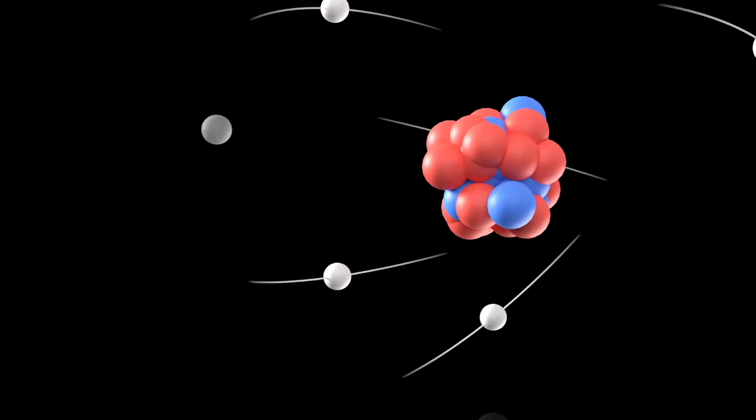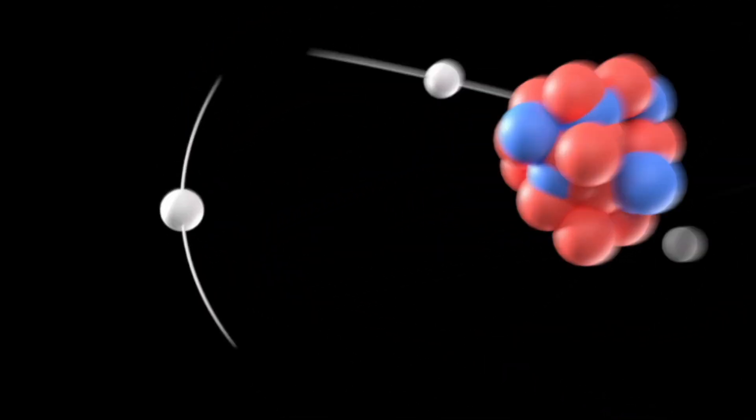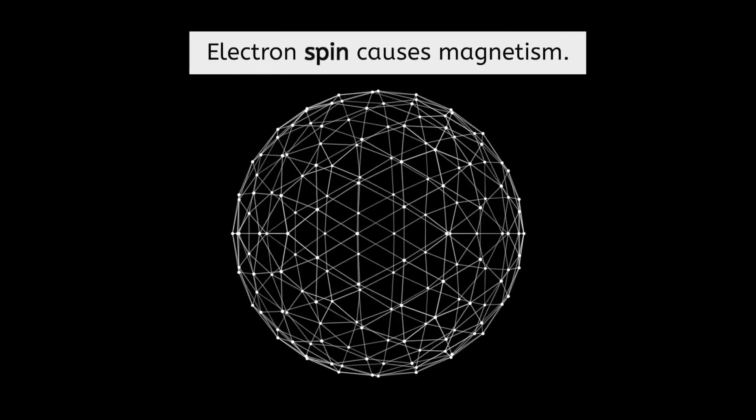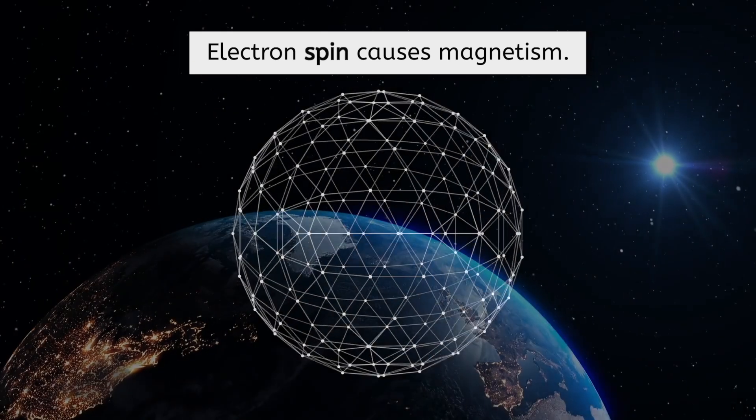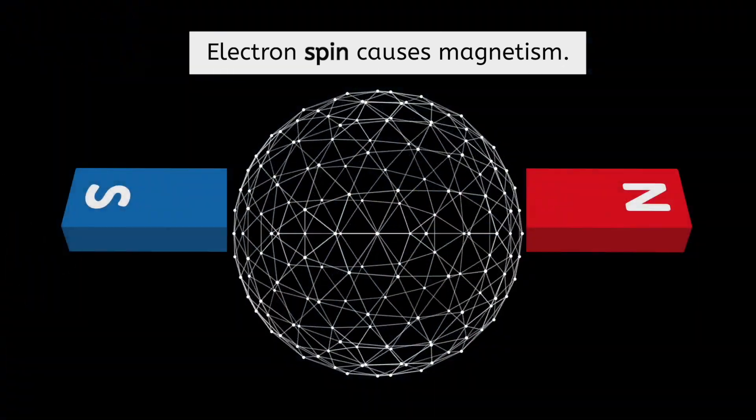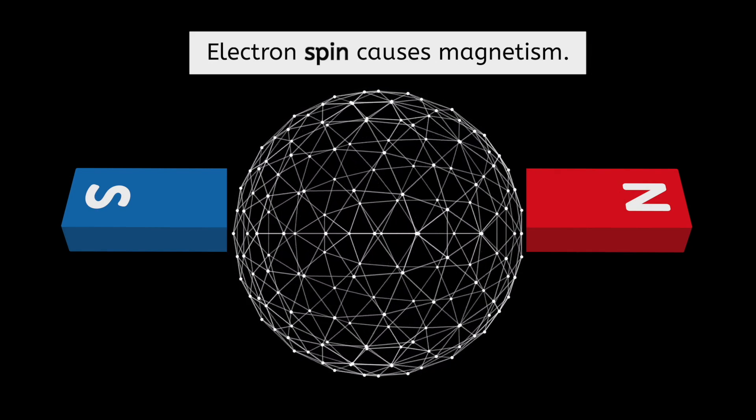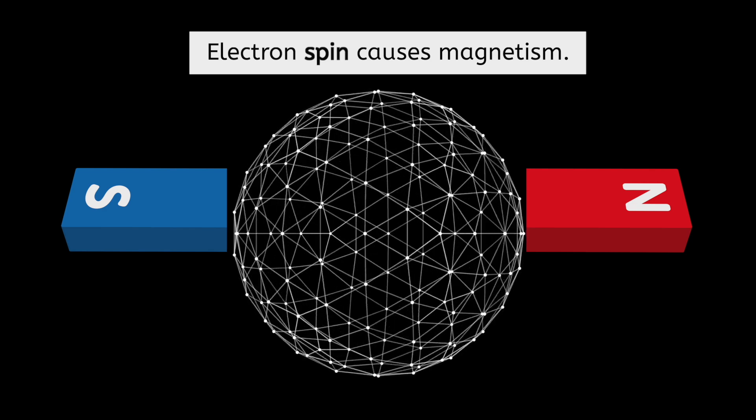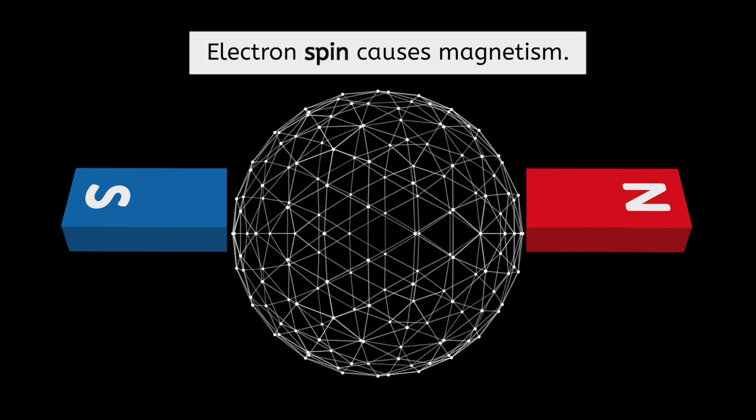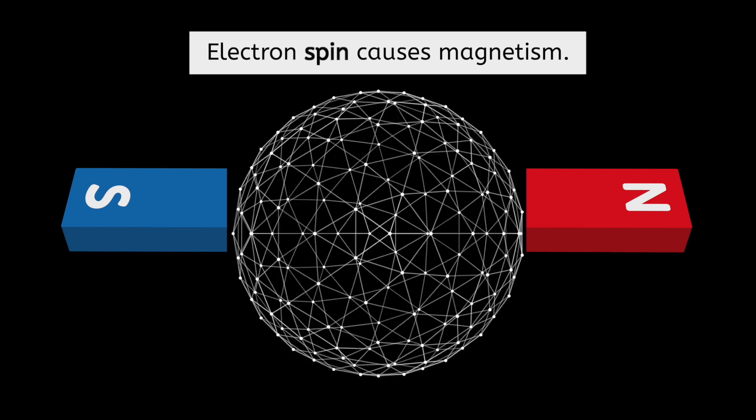Electrons cause magnetism because in addition to orbiting the nucleus of an atom, they also have angular momentum, which generally arises from spin, just like the Earth spins as it orbits the Sun. Scientists are still unsure whether electrons spin in the traditional sense that we are used to, but the direction of their angular momentum creates a North and South Pole. So this property of electrons is referred to as their spin.